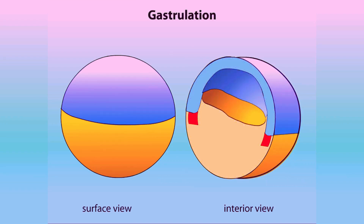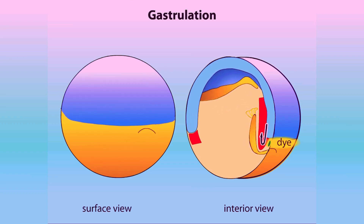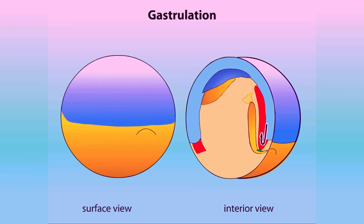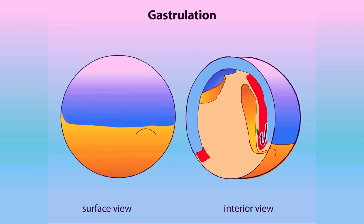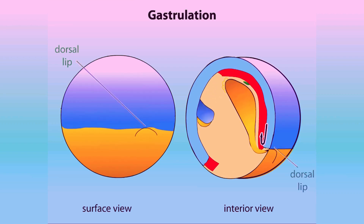At the beginning of gastrulation, a few surface cells called bottle cells move into the interior of the embryo, followed by other surface cells. We can track the movement of cells into the embryo if we add dye to the future cell surface.